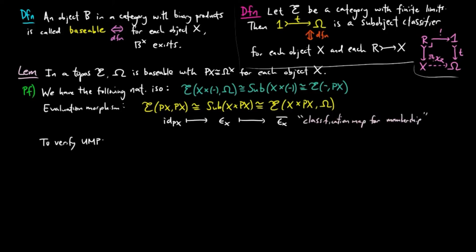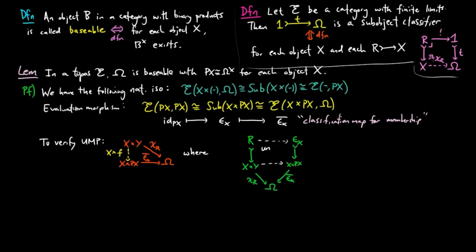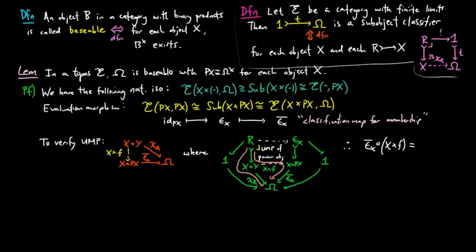To verify the universal mapping property of exponentials, given a morphism χ_R from X cross Y to Ω, there is a unique morphism f from Y to PX, where f is induced by the universal mapping property of the power object PX. Since the two gray paths factor through the terminal object and the generic sub-object by the universal mapping property of the sub-object classifier, we have that the following composition is equal to χ_R, completing the proof.